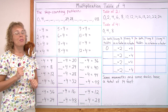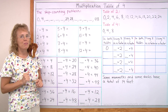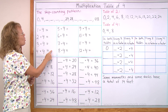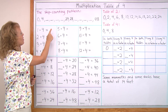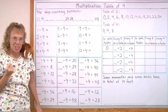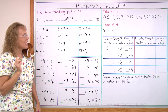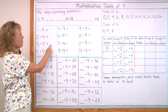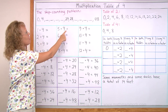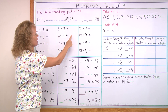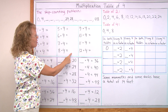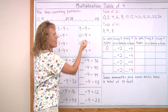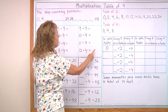Now let's go on and study the multiplication table of 4. That skip counting list — those answers go here in order. So we have 4, 8, 12, 16 and so on. We have 1 times 4 is 4, then 8, 12, 16, 20, 24, 28, 32, 36. 10 times 4 is 40 — that's easy. Then 44 and 48.